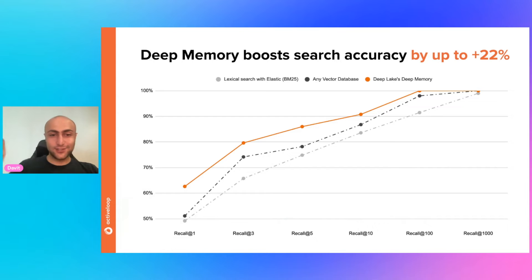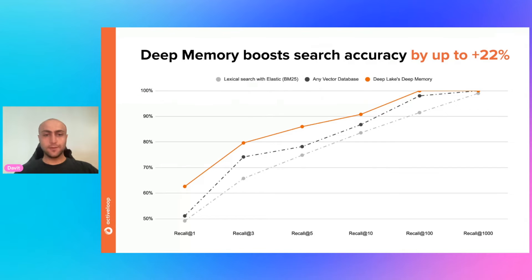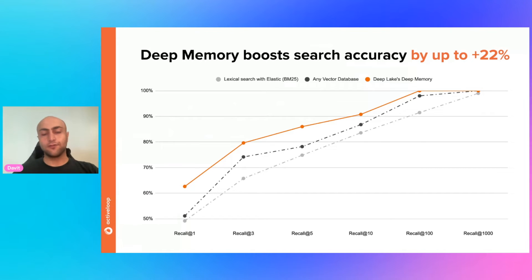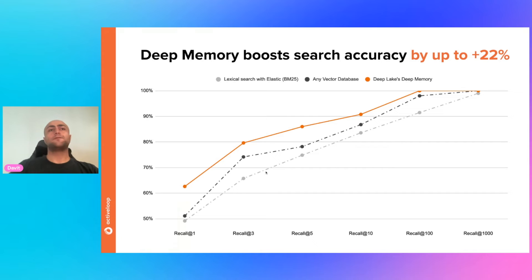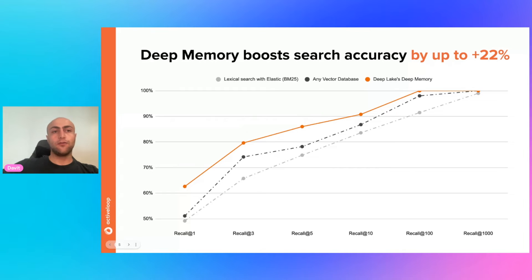We are super excited to announce Deep Memory, a feature that boosts search accuracy by up to 22%. Vector search has become extremely powerful thanks to large language models — embeddings now outperform traditional keyword search when looking for specific information in large document sets. Given a few query-relevance label examples, we figured out you can boost search accuracy by up to 22% without changing your existing embeddings. You can bring your OpenAI embeddings, your own model's embeddings, or CLIP embeddings — it doesn't matter.